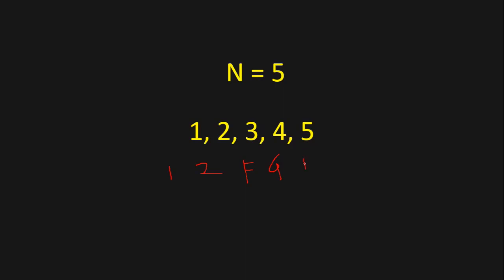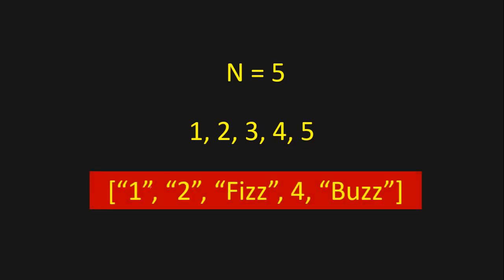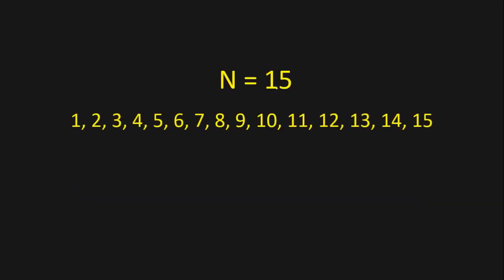So for N equals 5, we return the list: 1, 2, Fizz, 4, Buzz. Here we have 'Fizz' because 3 is a multiple of 3, then 4, then 'Buzz' because 5 is a multiple of 5. Now if we are given N equals 15, then we have numbers from 1 to 15.